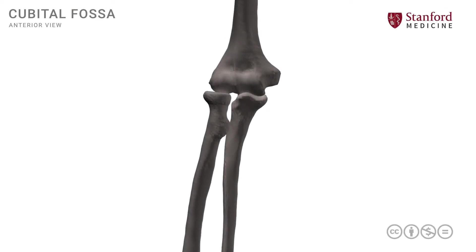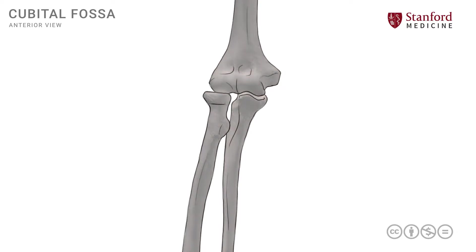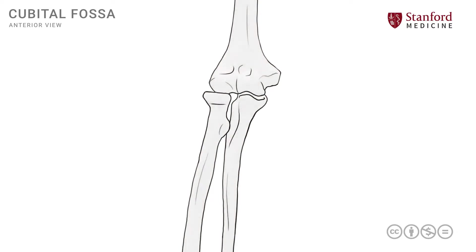In this lesson, we will review the boundaries and the structures that participate in the formation of the cubital fossa. The cubital fossa is a triangular area on the front, or the anterior side, of the elbow joint, and we can start by looking at an anterior vantage point of the right elbow joint.